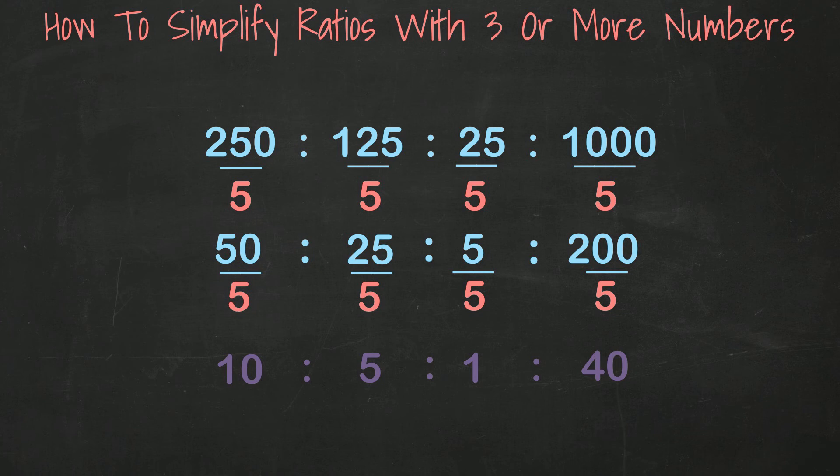Since we have 1 as one of our numbers, we know we can't reduce it any further. So our ratio of 250 to 125 to 25 to 1,000 can be simplified down to 10 to 5 to 1 to 40.